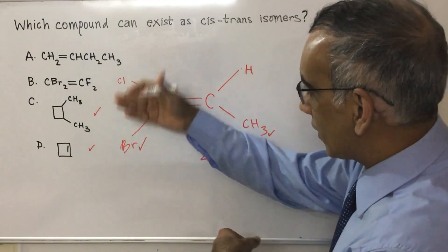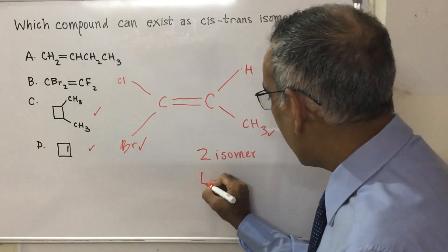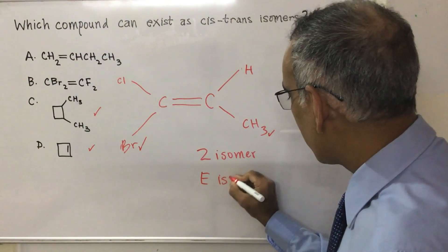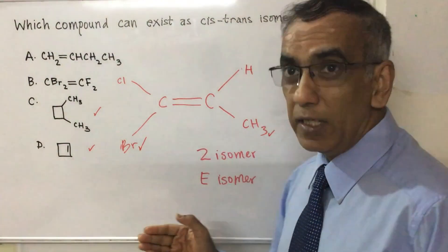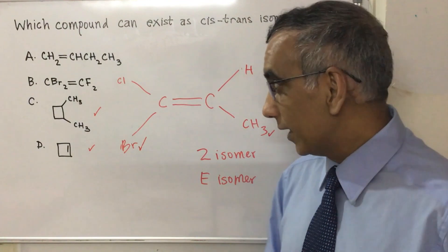And if you have this moved around, and if this is flipped over this way, then you would have the E version of the isomer. The E and Z notation is what's required by the IB Chemistry Guide.